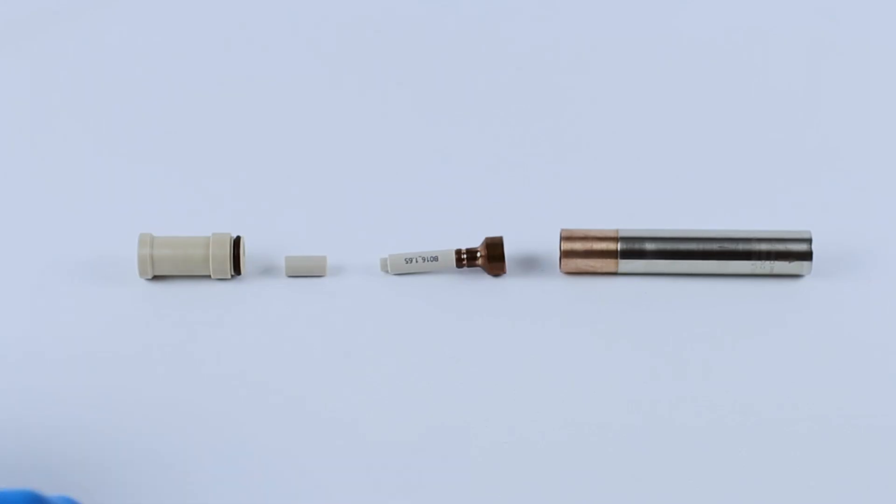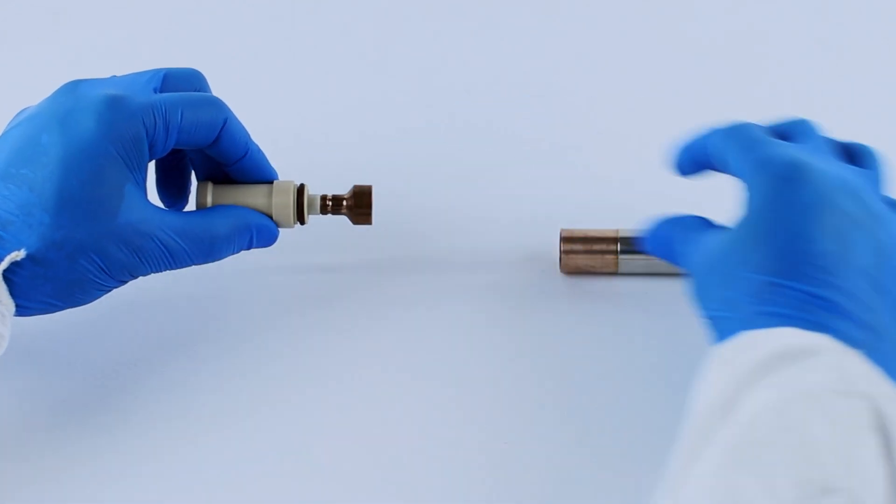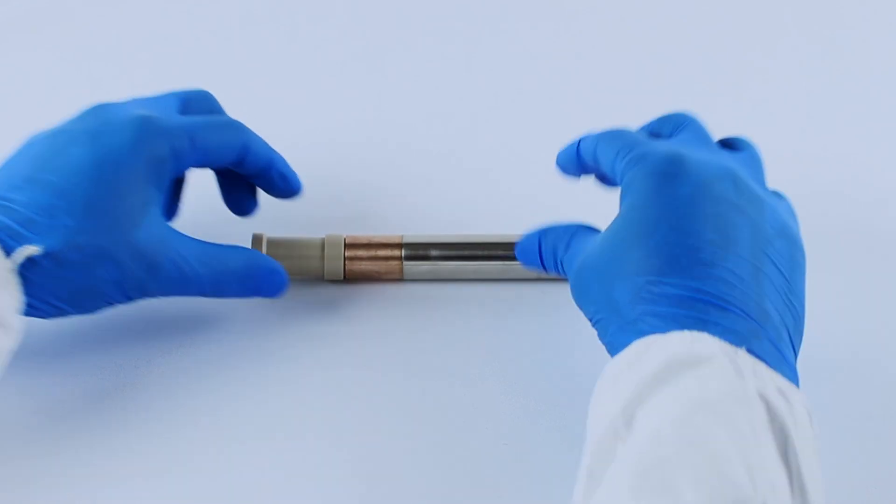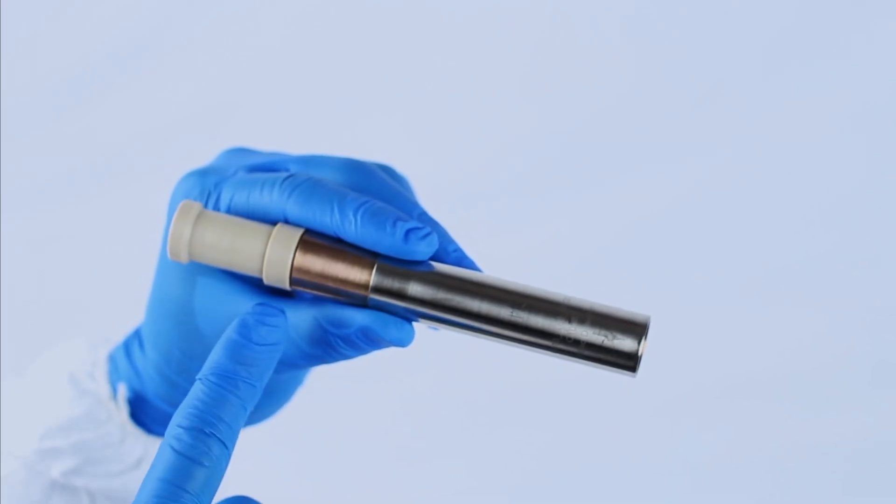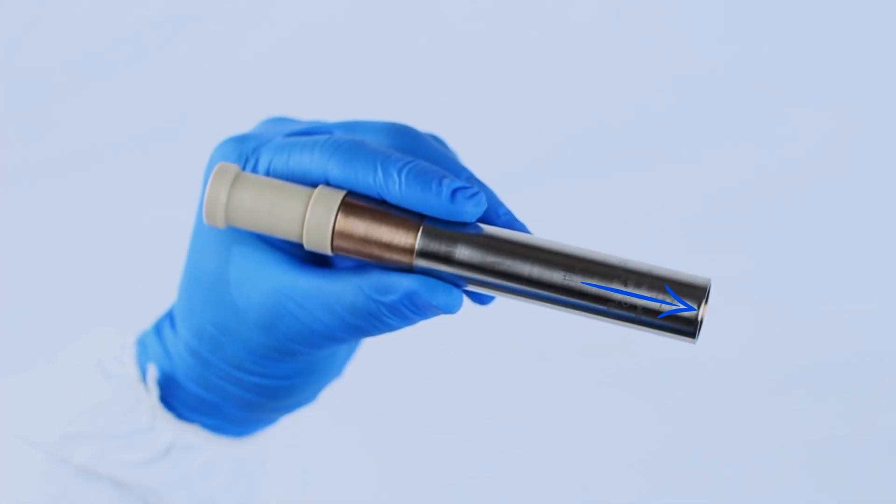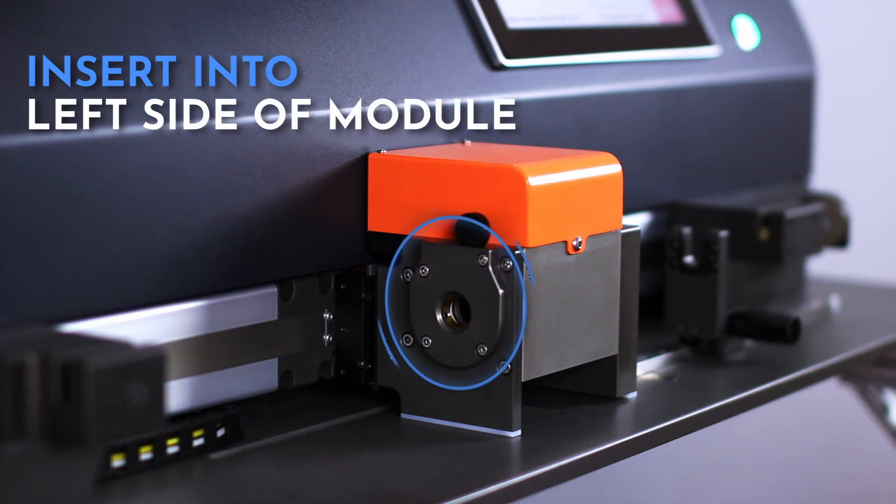To assemble the rest of the mold, first insert the end plug, then the spacer, into the left side of the mold center before inserting the mold holder. When the O-ring is properly seated, the mold holder should fit tightly with a small gap between the holder lip and the mold center. The arrow will always point toward the right side of the mold, which will first be inserted into the left side of the module.